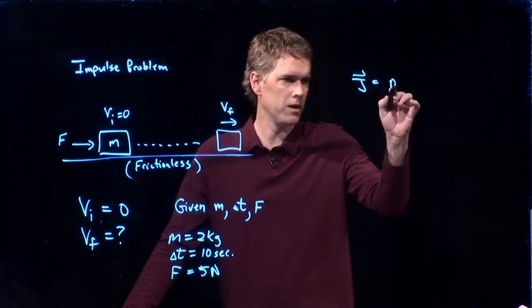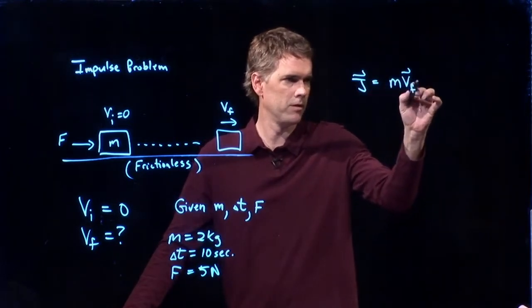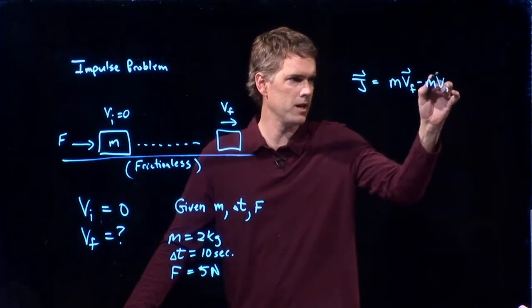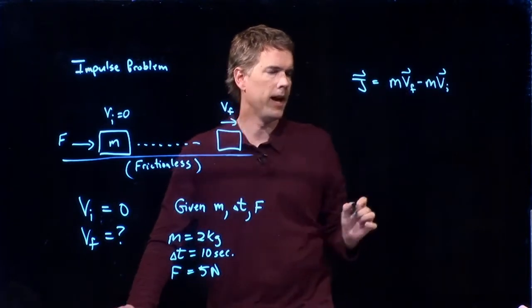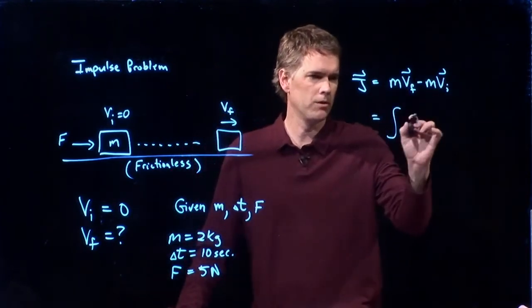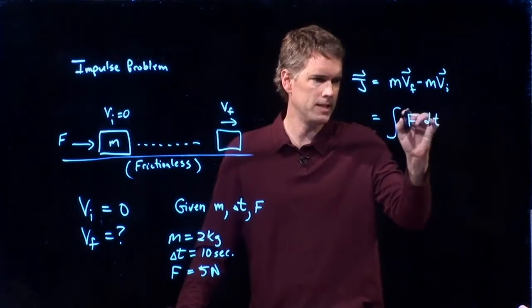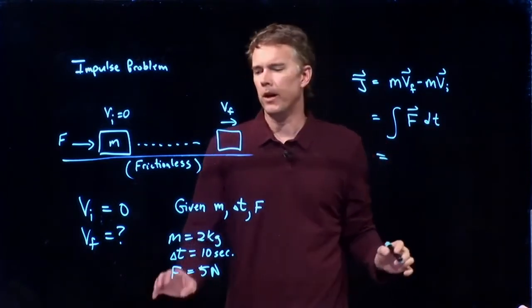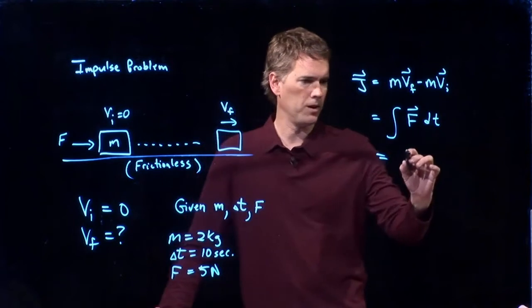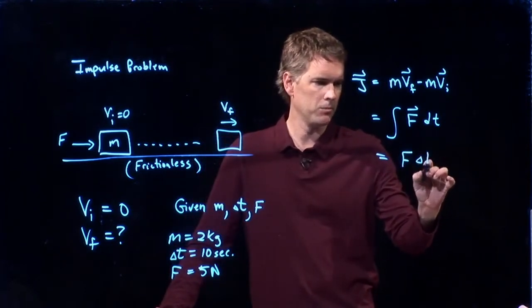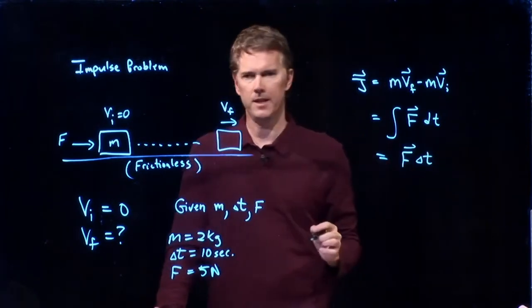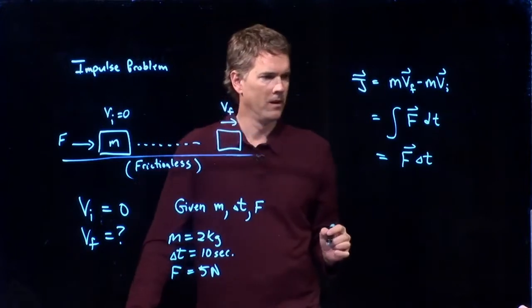Impulse is m vf minus m vi, and that is equal to the integral of f dt, but if f is a constant that whole time, then this becomes f delta t.